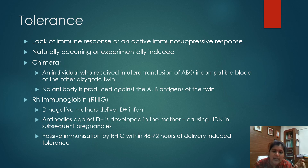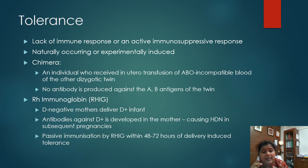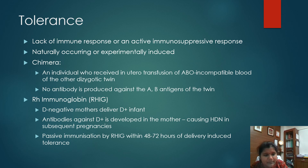The first example of tolerance is chimera. A chimera is an individual who received an in utero transfusion of ABO-compatible blood from a dizygotic twin. There are two twins with different blood group antigens, and the individual who received a transfusion from the other twin is continuously exposed to the other's blood. Therefore, they do not produce antibody against the A and B antigens of the other twin.